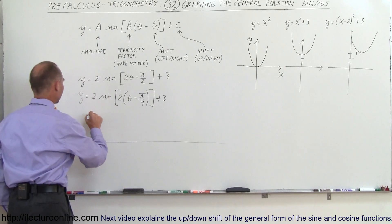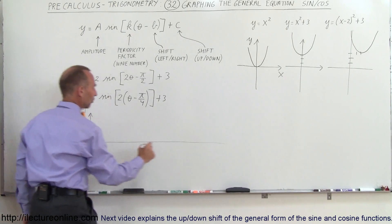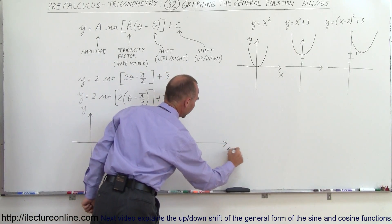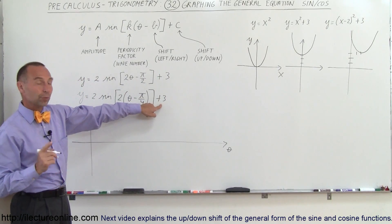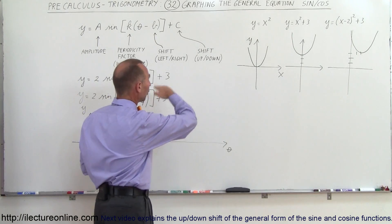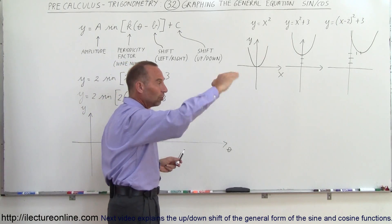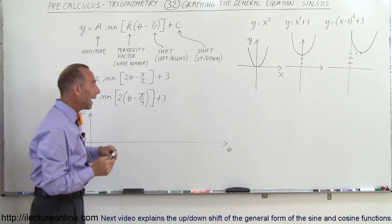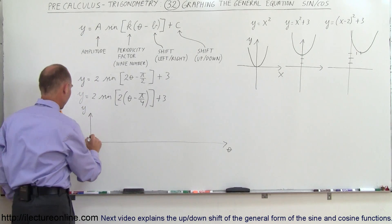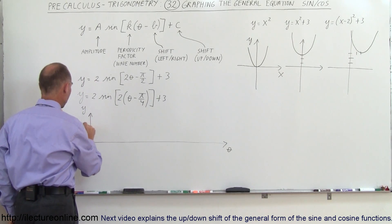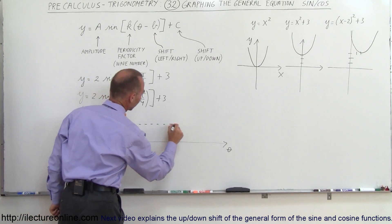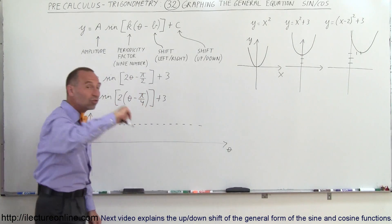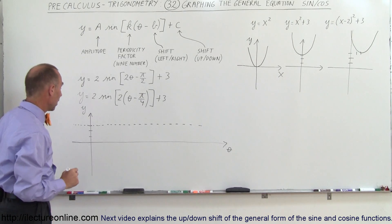So on the vertical axis we have the variable y. On the horizontal axis we have the variable θ. Now notice that the whole function is going to be shifted up 3 units. That means the equilibrium point, the point about which the sine function will oscillate, will be at y equals 3. So we have 1, 2, 3 and then at that point we're going to put on the dotted line because that will be the line about which the oscillations of sine function will be drawn.